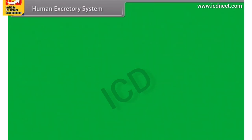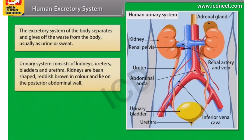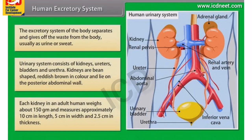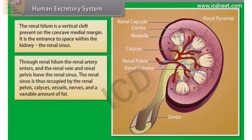The excretory system of the body separates and gives off waste from the body, usually as urine or sweat. The urinary system consists of kidneys, ureters, bladders and urethra. Kidneys are bean-shaped, reddish-brown in colour, and lie on the posterior abdominal wall. Each kidney in an adult human weighs about 150 grams and measures approximately 10 cm in length, 5 cm in width and 2.5 cm in thickness. The renal hilum is a vertical cleft present on the concave medial margin and is the entrance to the space within the kidney called the renal sinus. Through the renal hilum, the renal artery enters, and the renal vein and renal pelvis leave the renal sinus, which is occupied by the renal pelvis, vessels, nerves and a variable amount of fat.